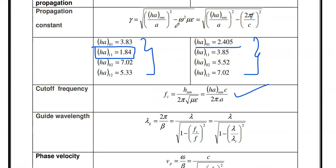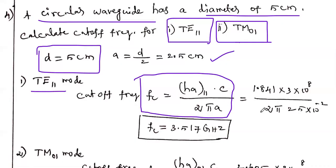You should remember these Ha values to solve the problems. So Ha_11 = 1.84, C = 3×10^8 m/s, and A = 2.5 cm. Calculating this gives the cutoff frequency as 3.517 GHz.